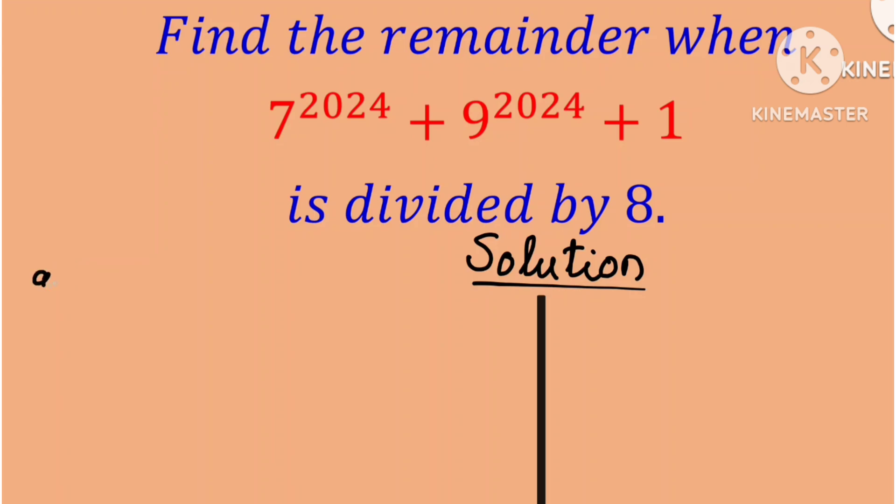We know that A mod N is the remainder obtained when A is divided by N. Take for example, 7 mod 2 is the remainder obtained when 7 is divided by 2, and that remainder is 1. 3 mod 5 is the remainder obtained when 3 is divided by 5, and that remainder is 3.